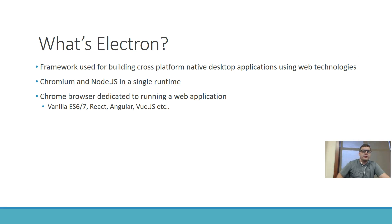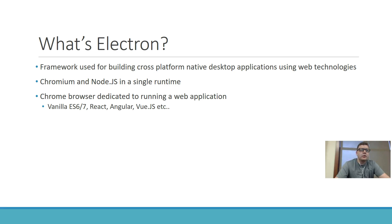What Electron basically is, is a Chrome browser that's dedicated to running a single application. It's kind of just a web server that you can download and install to your computer or desktop, and it'll run whatever you tell it to run. You can tell it to run a remote URL, and you can get Node.js with it so you can access the operating system at a somewhat high level.